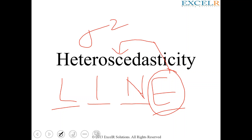If there is no equal variance in the errors, which are represented using epsilon, then this problem is called heteroscedasticity.